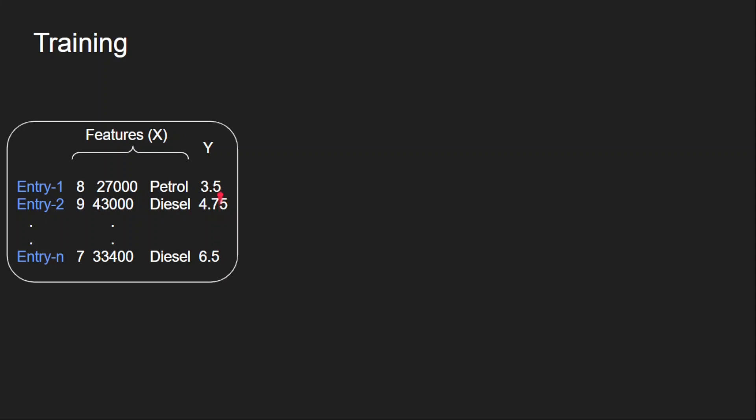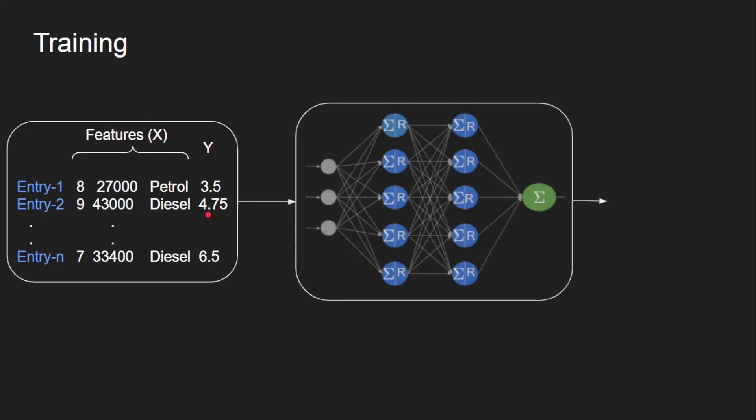I am representing this target as capital Y. It is a vector with n training examples. I am giving these features X as input to my network. And my network predicted the prices of all these examples, all these entries as these. This I am representing as Y hat, which is my predicted output. Now, I have my predicted output, which is the network output. And I also have the targets.